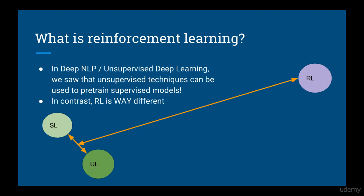The first thing you'll notice is how different reinforcement learning is from supervised and unsupervised learning. If you were to pictorially show how close each of these are, you can see that supervised and unsupervised learning aren't that different. You saw in an earlier course that we can actually use unsupervised learning to pre-train a neural network before doing supervised learning. In contrast, reinforcement learning is way out there.